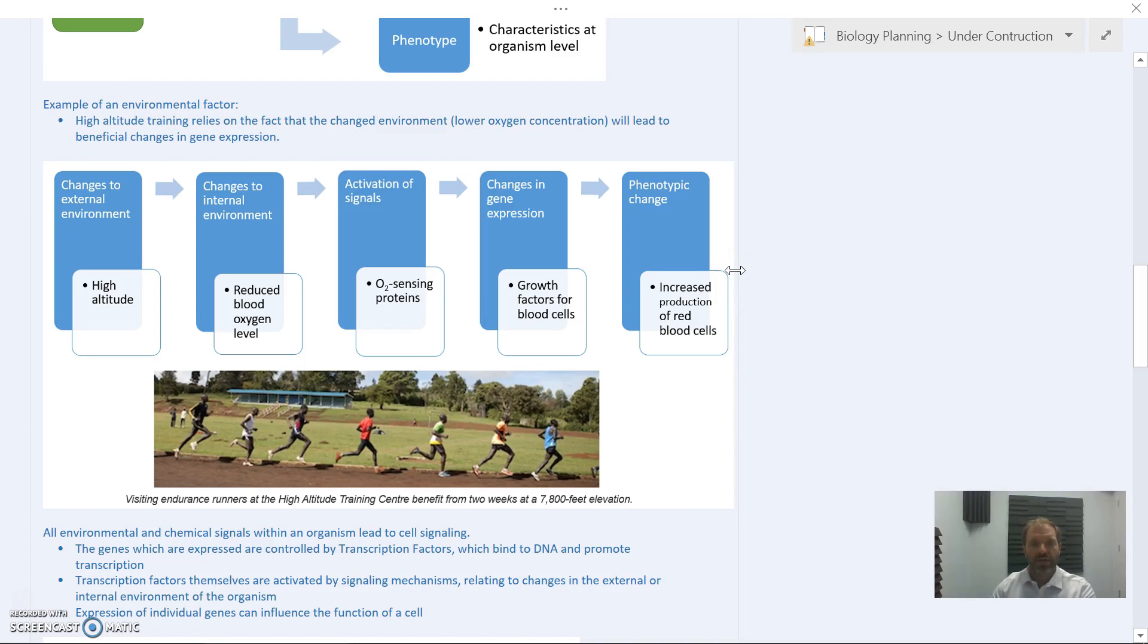That is a phenotypic change. In this case, this particular center advertised as two weeks at 7,800 feet. This is going to the point where you've got an increase in the number of blood cells, so when you go back to regular altitude, those extra blood cells mean you can carry around more oxygen, which will increase athletic performance.